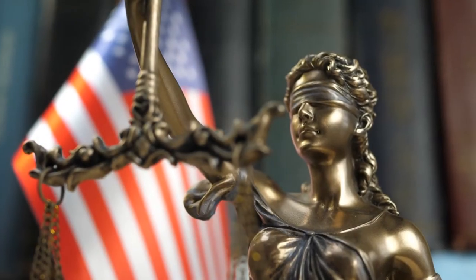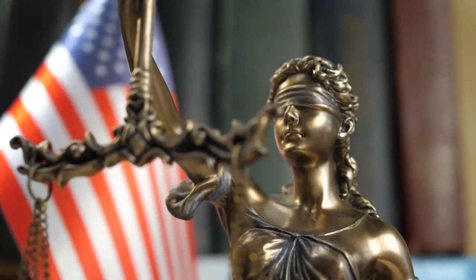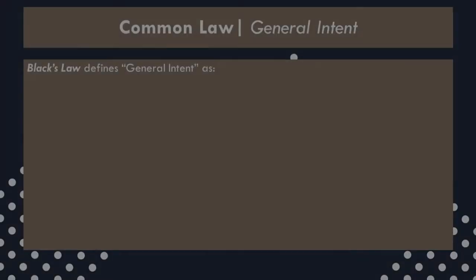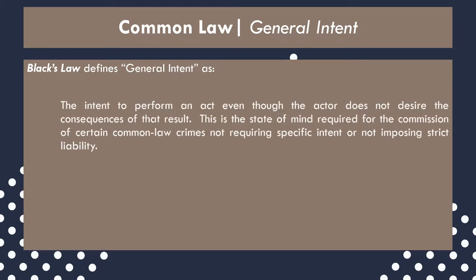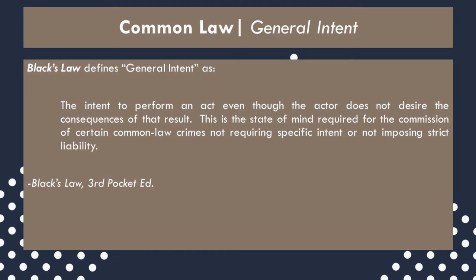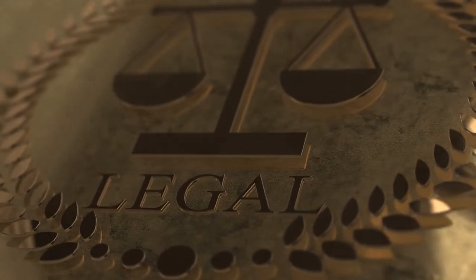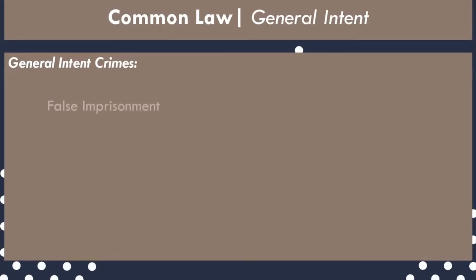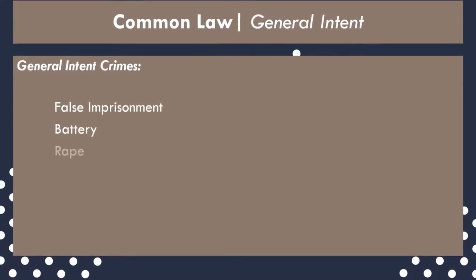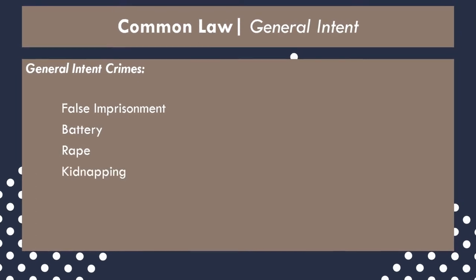General intent requires of the accused an awareness of the factors constituting the crime. Black's Law defines general intent as: "the intent to perform an act even though the actor does not desire the consequences of that result. This is the state of mind required for the commission of certain common law crimes not requiring specific intent or not imposing strict liability." All crimes, to a degree, are general intent crimes. However, there are common law crimes that don't require any specific mens rea type.